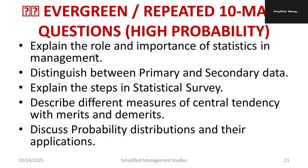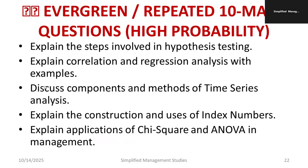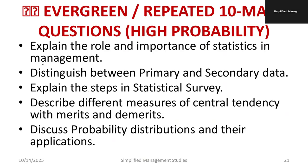Based on frequency of appearance, here are the 10 most probable questions: (1) Explain the role and importance of statistics in management. (2) Difference between primary and secondary data with examples. (3) Explain the steps of a statistical survey. (4) Describe measures of central tendency with merits and demerits. (5) Discuss probability distributions and applications. (6) Explain steps in hypothesis testing. (7) Explain correlation and regression analysis with equations. (8) Discuss components and methods of time series analysis. (9) Explain construction and uses of index numbers. (10) Explain applications of chi-square test and ANOVA in management — including accepting and rejecting the hypothesis with equations.